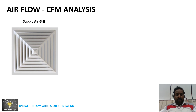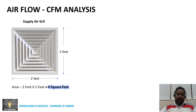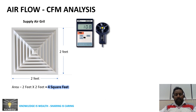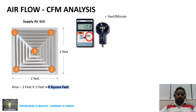We know the supply grill dimension is 2×2, that is two feet by two feet, so the area of the supply grill tile is 4 square feet. For the next part, we analyze the airflow of this supply grill using an anemometer set to feet per minute. We need to perform airflow analysis at five points — all four diagonals and the center of the supply grill.